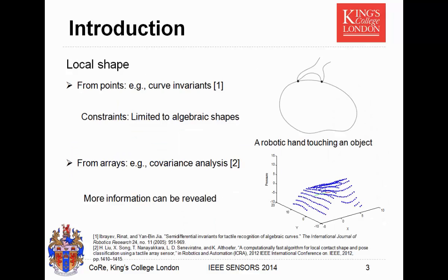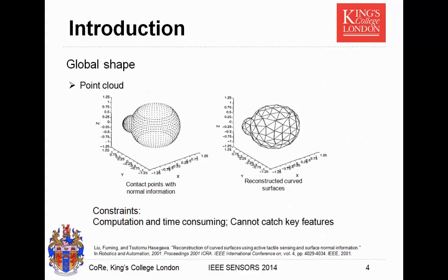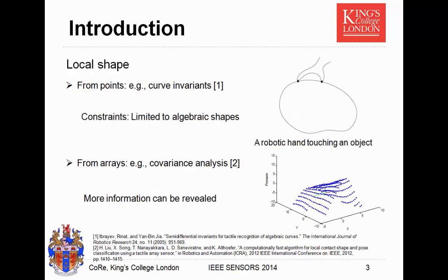Let's review the past research. Some researchers did work on shape recognition with tactile sensors. First is the local shape. Some researchers approach it from points — for example, there are two points on the object. We use some force sensors or simple tactile sensors to touch the object. From these points we can get normal forces and the curvatures of objects, so we can infer the local shape. But this method is limited to simple shapes.